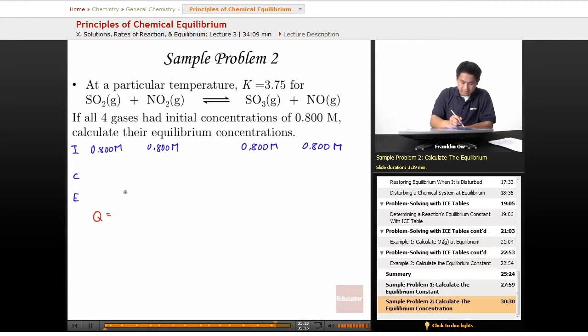So this is going to be equal to concentration of SO3 initial, times the concentration of NO initial, divided by concentration of SO2 initial, times the concentration of NO2 initial. And that's just going to be equal to 1.00, which is going to be less than K.